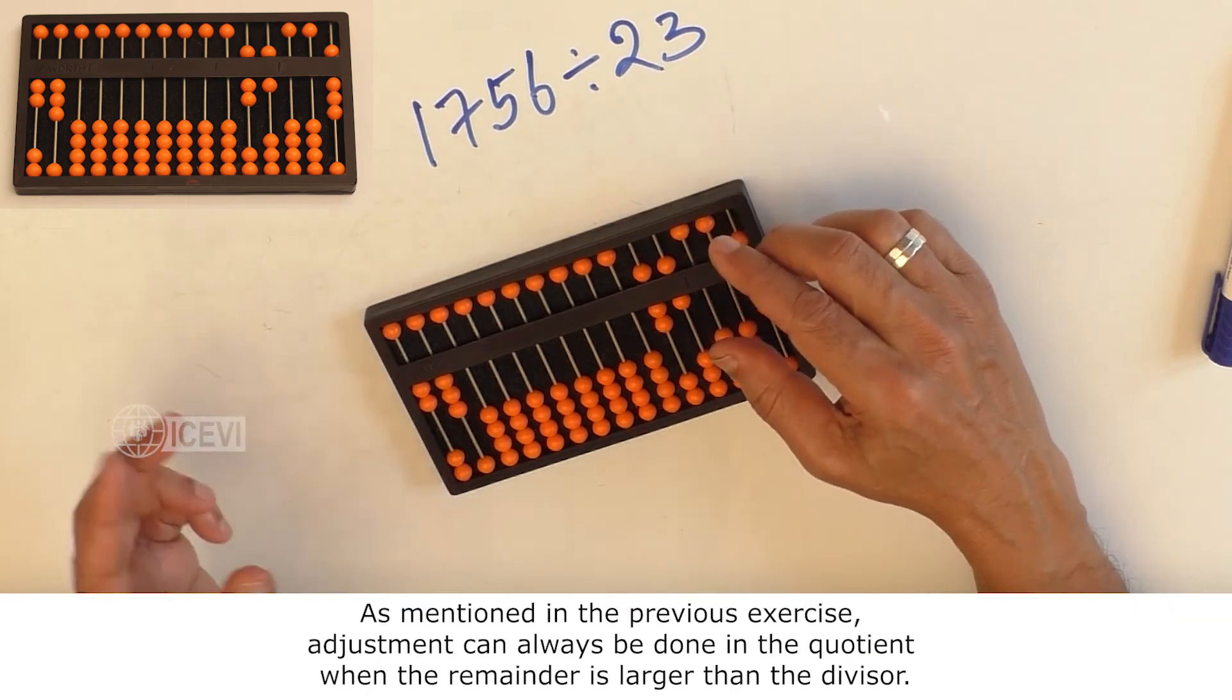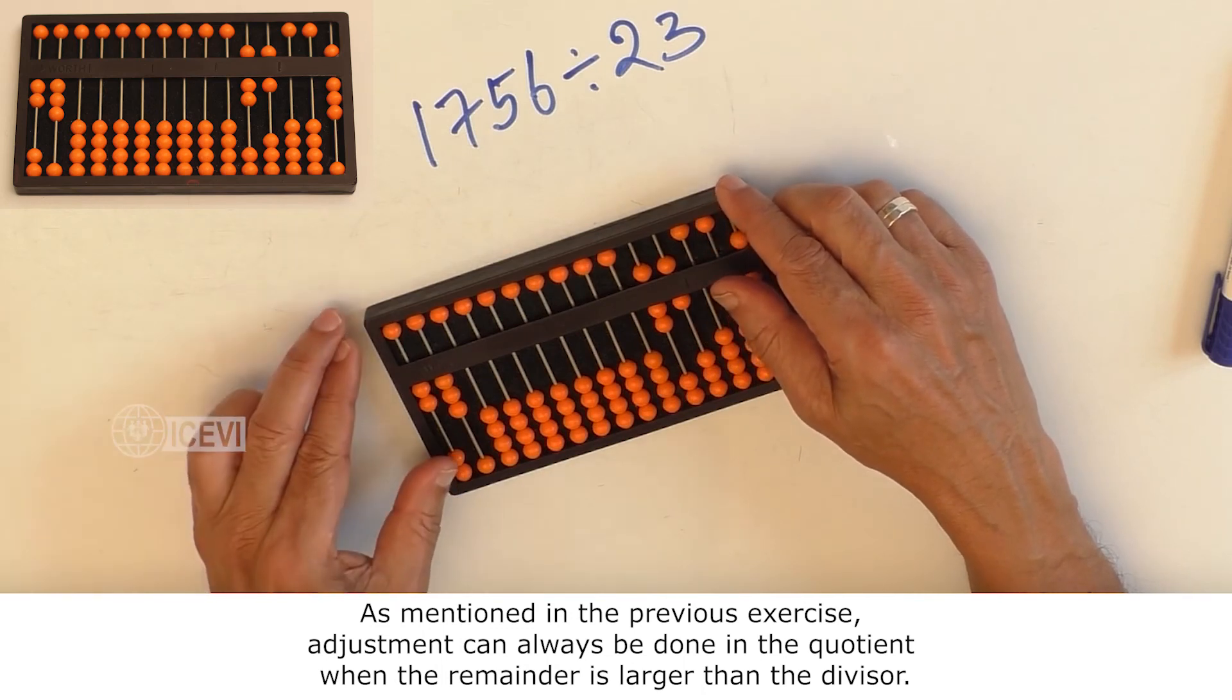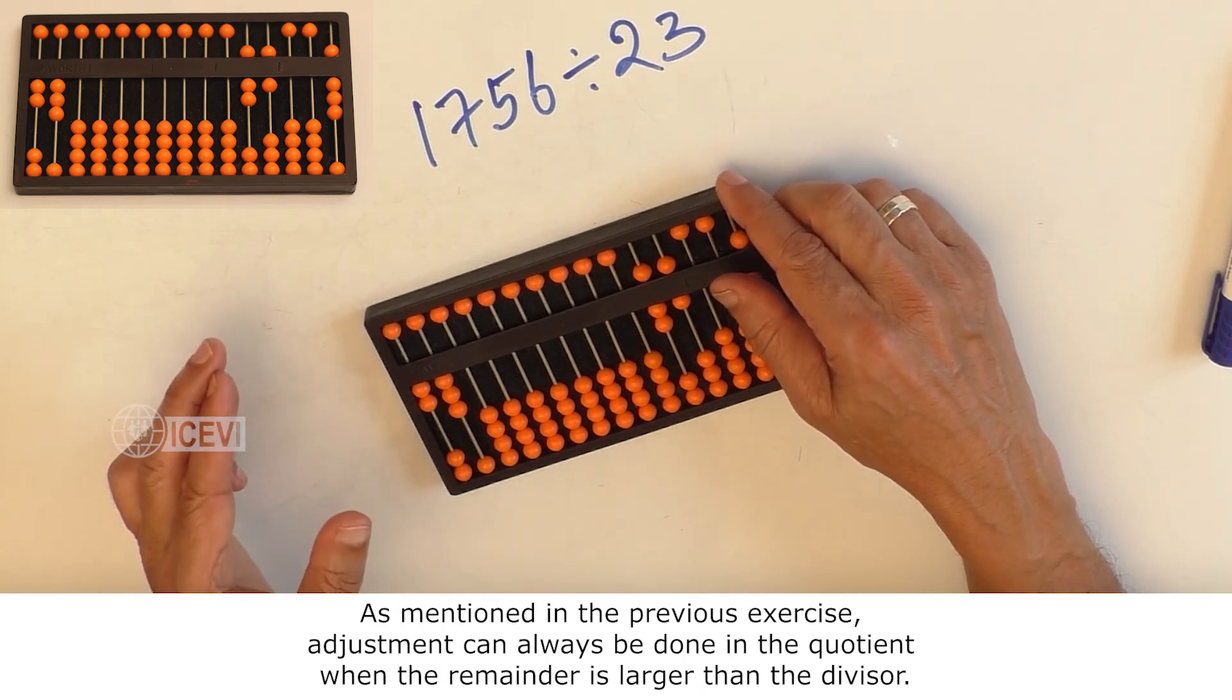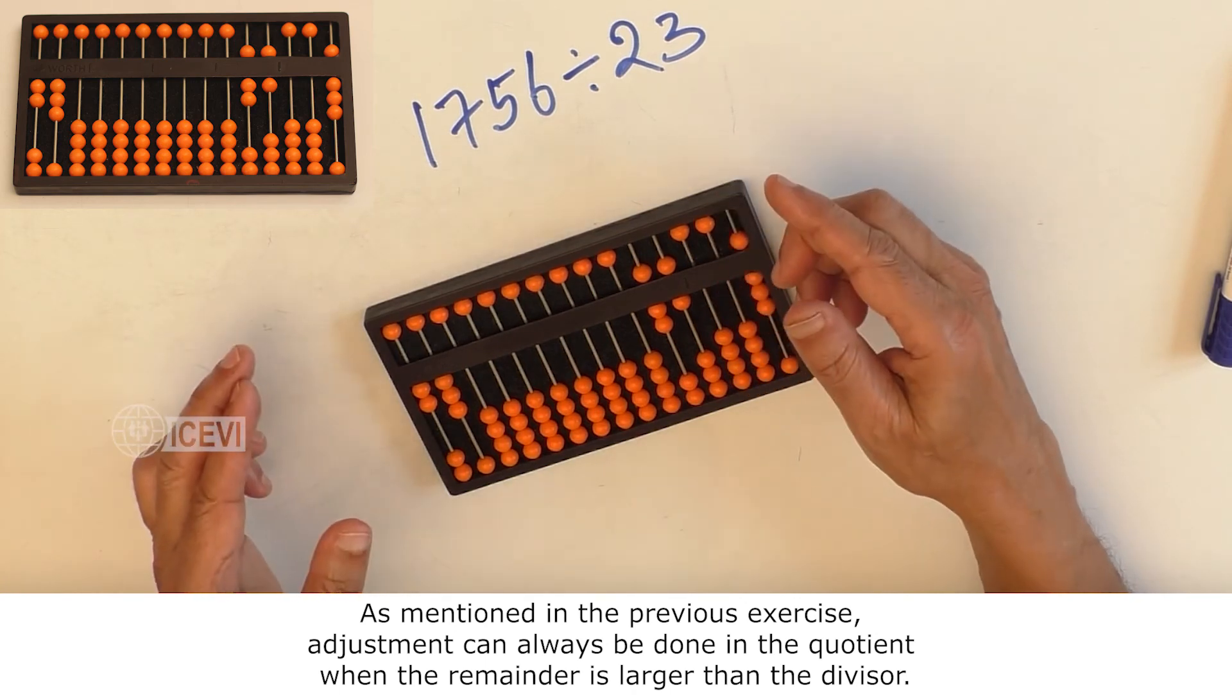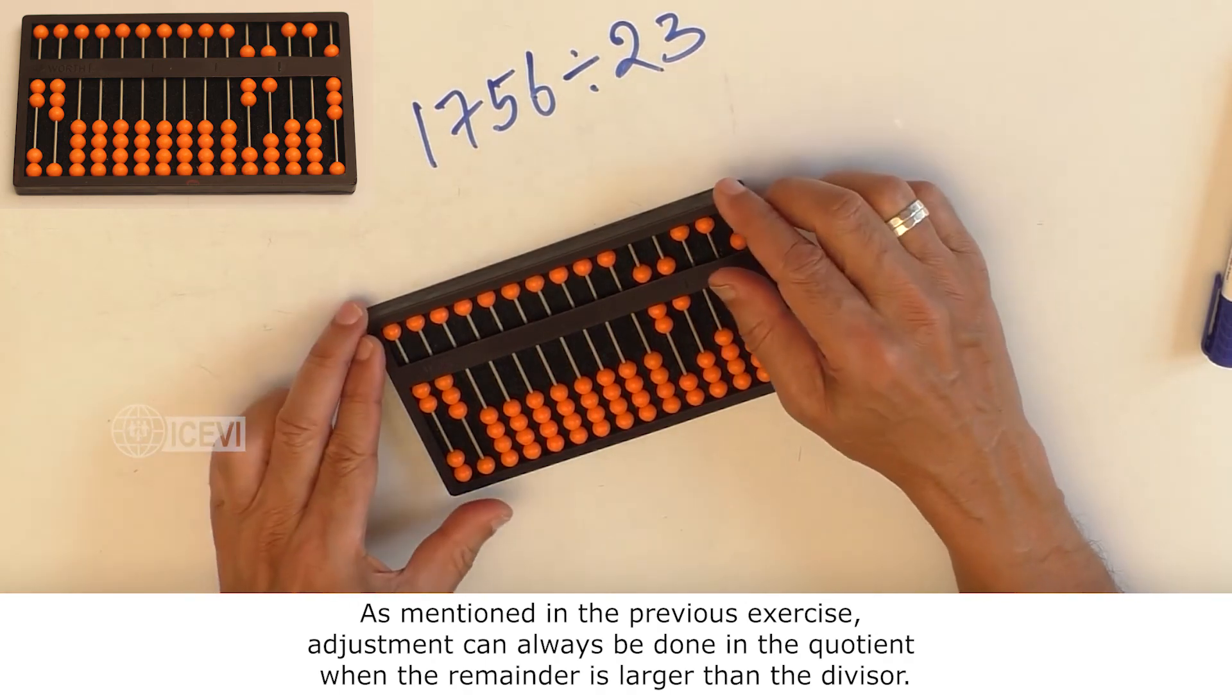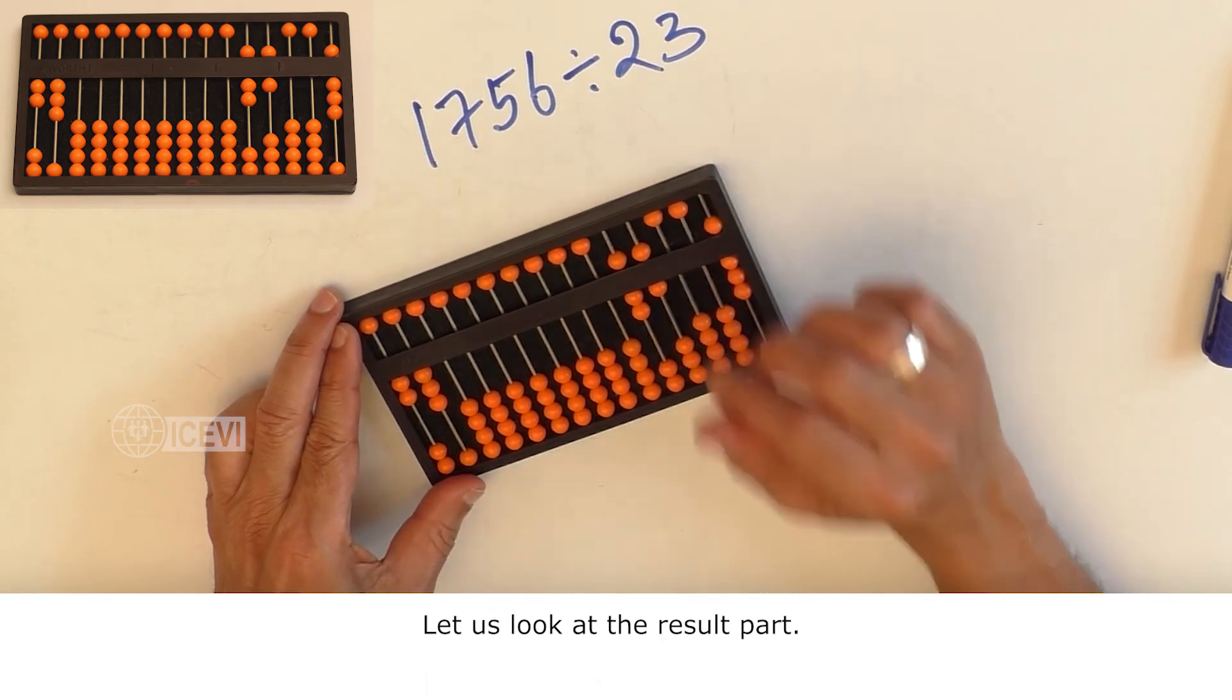As mentioned in the previous exercise, adjustment can always be done in the quotient when the remainder is larger than the divisor. Let us look at the results part.